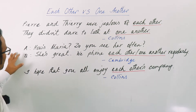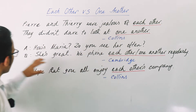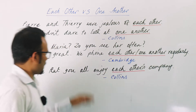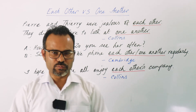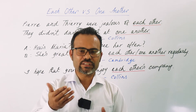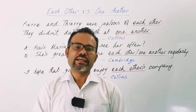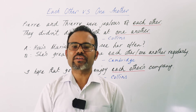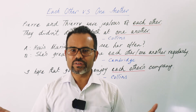Let's look at this Cambridge Online Dictionary example. A: 'How is Maria? Do you see her often?' B: 'She's great. We phone each other — or one another — regularly.' So according to Cambridge, 'each other' and 'one another' are the same — no distinction.